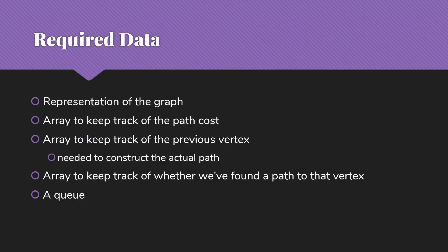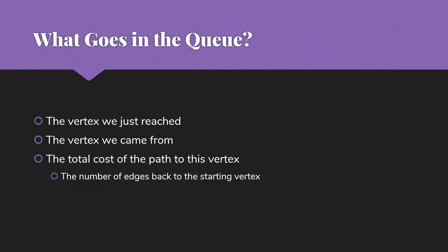We need to think about what information we need to keep in the queue. We're going to need what vertex we just reached, what vertex we came from, and the total cost of the path to this vertex — in this case, the number of edges back to the starting vertex. Those are going to allow us to provide the information we need in the end.